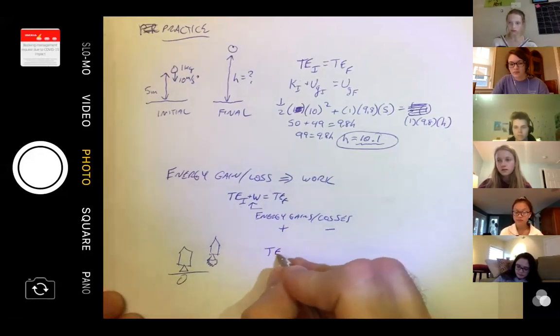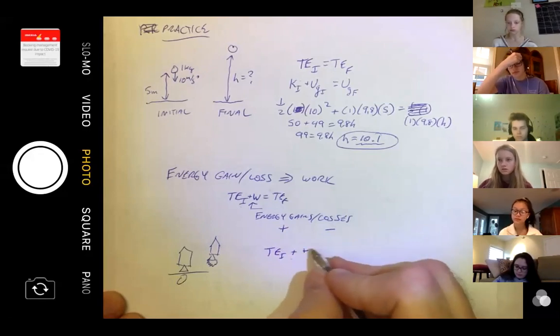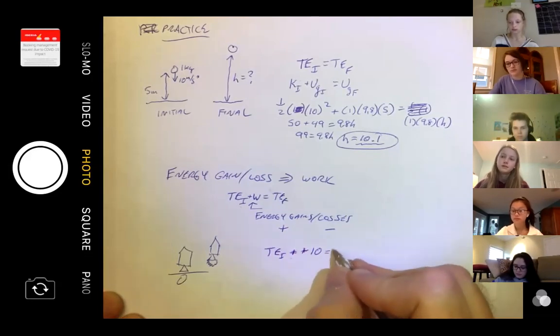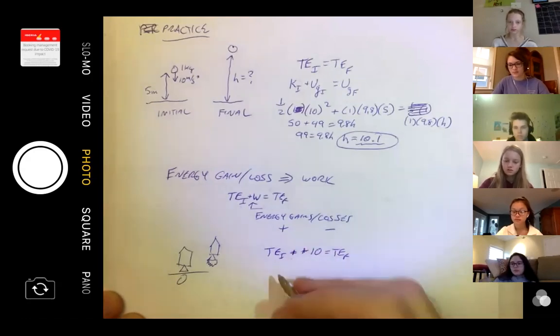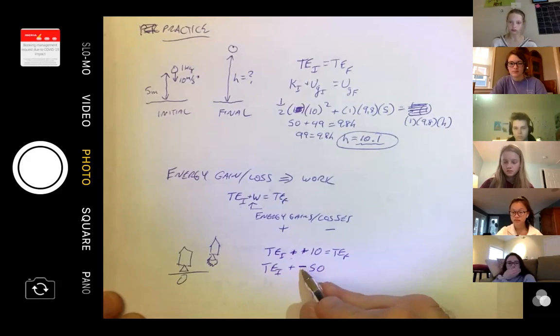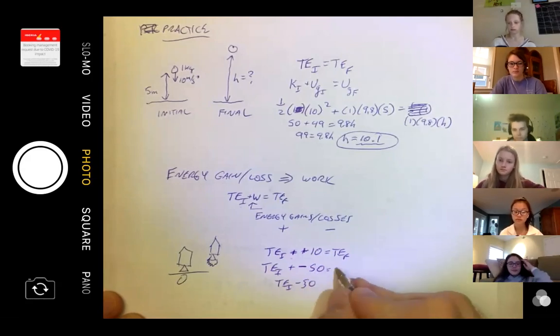I think I said yesterday in the video, I always put this plus sign - it seems redundant, but if I have an energy gain, let's say something gains 10 units of energy, I'm going to add a positive 10 units. If it loses energy, I want to emphasize that I am losing that energy. If something has friction acting on it and it takes 50 joules of energy out, I really want to see that that is a loss. I could have just as easily written that as TEI minus 50 equals final energy.